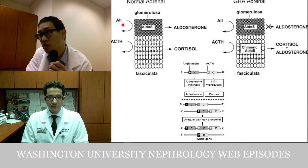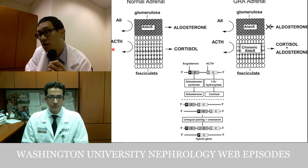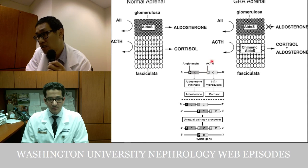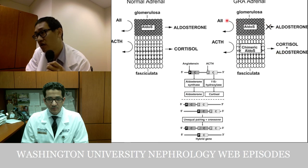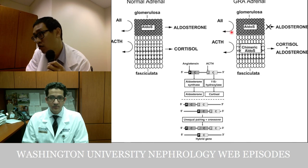Under normal circumstances, aldosterone is secreted from the zona glomerulosa under the effect of angiotensin 2 and potassium, while cortisol is secreted from the zona fasciculata under ACTH. Because these genes are very similar, unequal pairing and crossover can mix up the promoter and coding regions, creating a hybrid gene. The result is that aldosterone is now secreted in the zona fasciculata under ACTH control, producing far too much aldosterone that angiotensin 2 cannot suppress.